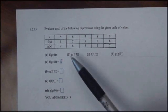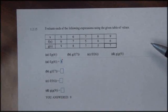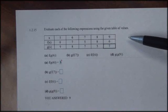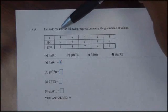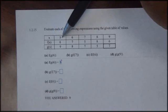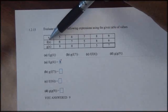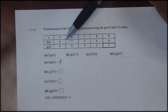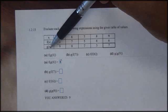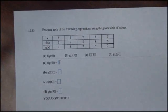In this example we're going to evaluate each of the following expressions using the given table of values. If we examine the table of values, notice in the first row we're given the input values for x which are 5, 6, 7, 8, and 9. We're given the function f evaluated for each x value, and we also have g evaluated for each one of the x values.